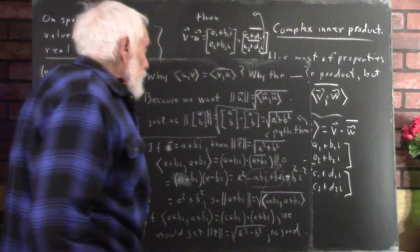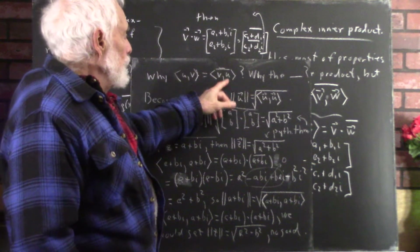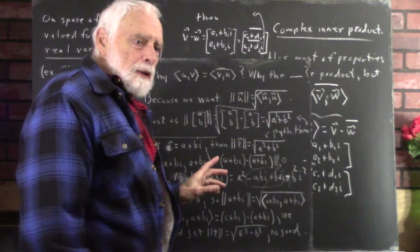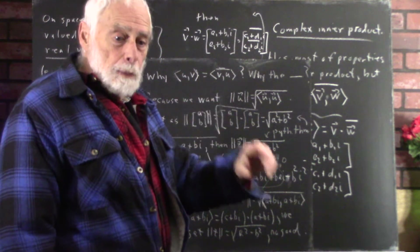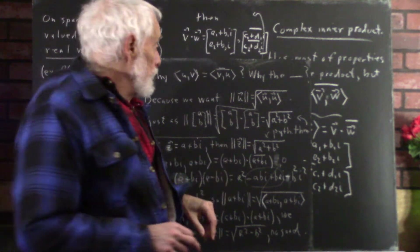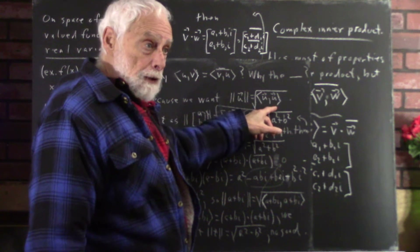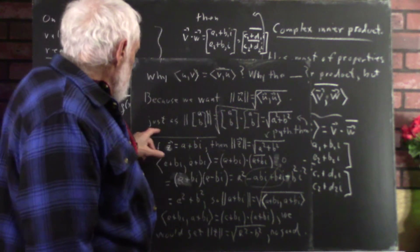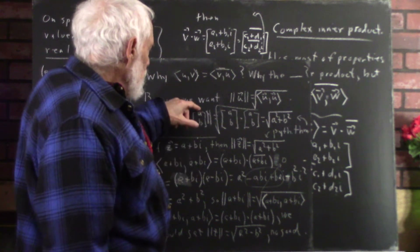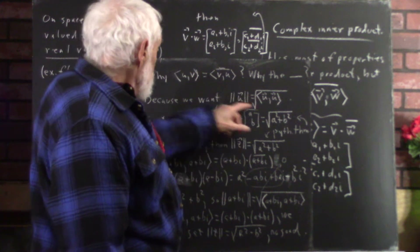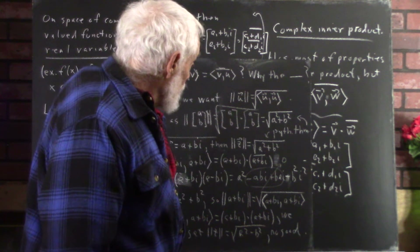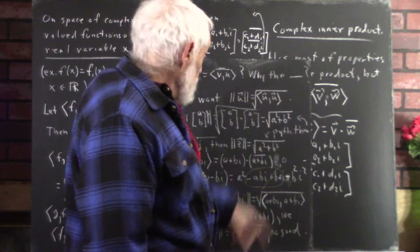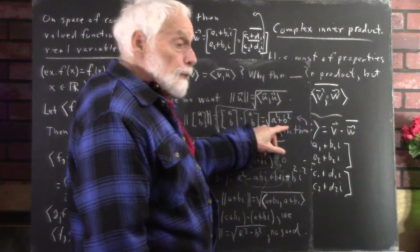Why do we require complex conjugate symmetry — why does ⟨u,v⟩ = conjugate of ⟨v,u⟩? Because, as with real inner products, we want to define the norm of a vector as the square root of the inner product of the vector with itself, giving us essentially a Euclidean metric. Just as the norm of a real column vector (a, b) is the square root of a² + b².